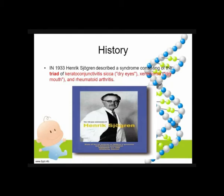In 1933, Dr. Hendrik Sjogren described a syndrome consisting of a triad: keratoconjunctivitis sicca or dry eyes, xerostomia or dry mouth, and rheumatoid arthritis. So you have dryness of the eyes, dryness of the mouth, and also rheumatoid arthritis with its boutonniere and swan neck deformities and other hallmark signs.